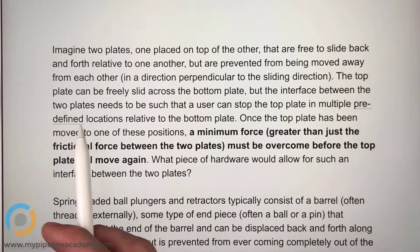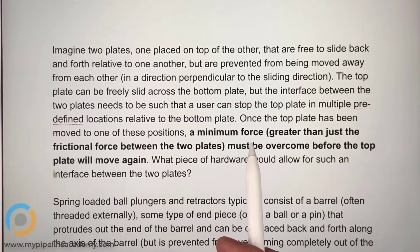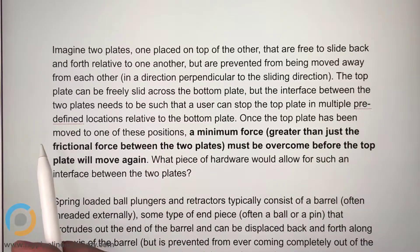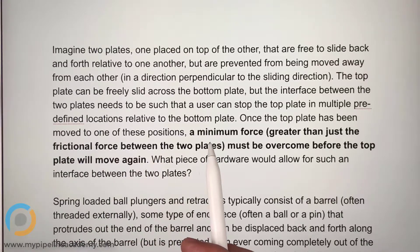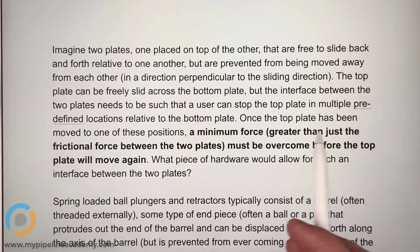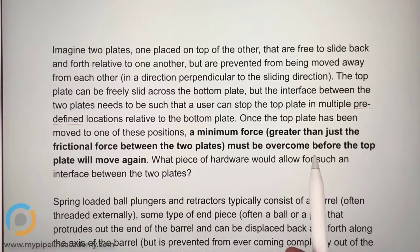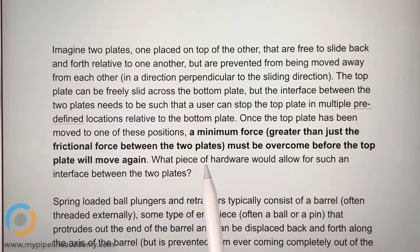The interface between the two plates needs to be such that a user can stop the top plate in multiple predefined locations relative to the bottom plate. Once the top plate has been moved to one of these positions, a minimum force greater than just the frictional force between the two plates must be overcome before the top plate will move again.